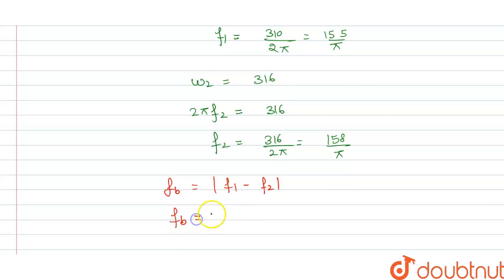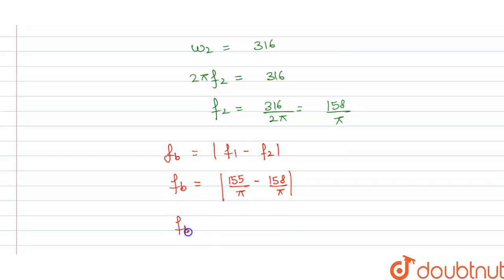We have frequency 1 is 155/π and frequency 2 is 158/π. From this we get beat frequency equals 3/π, and this is our answer for this question.